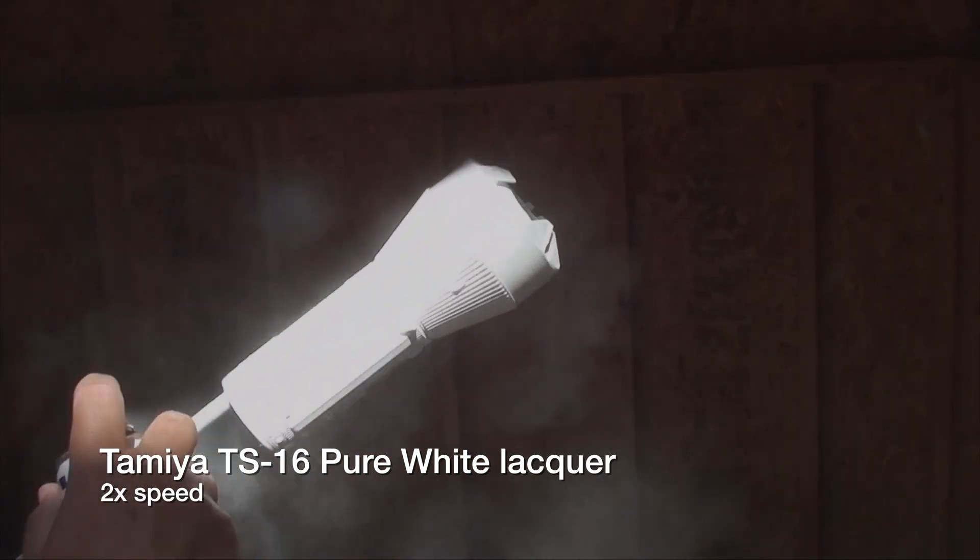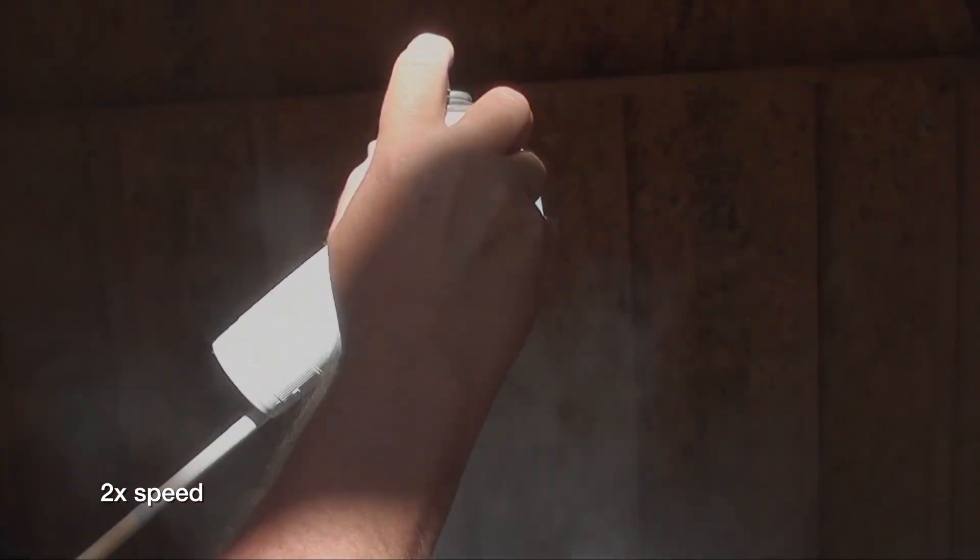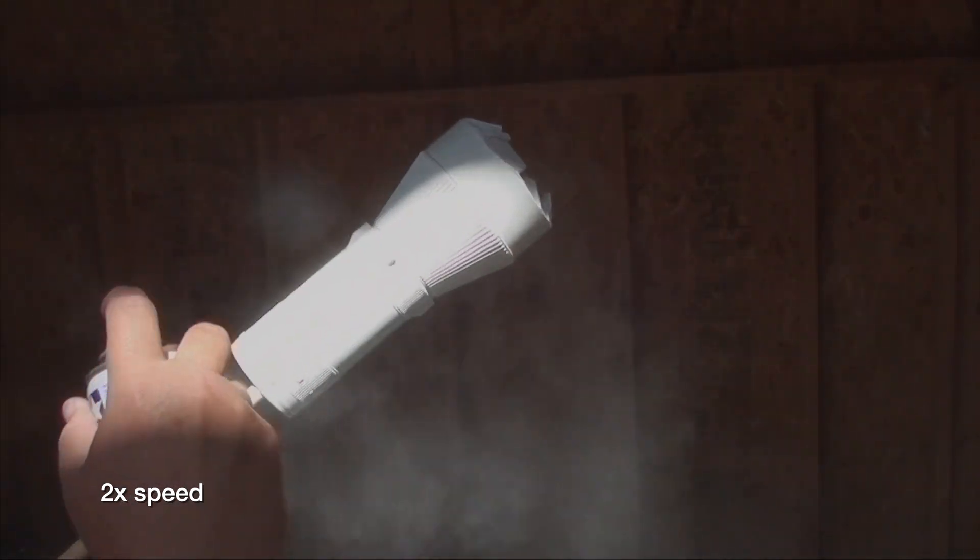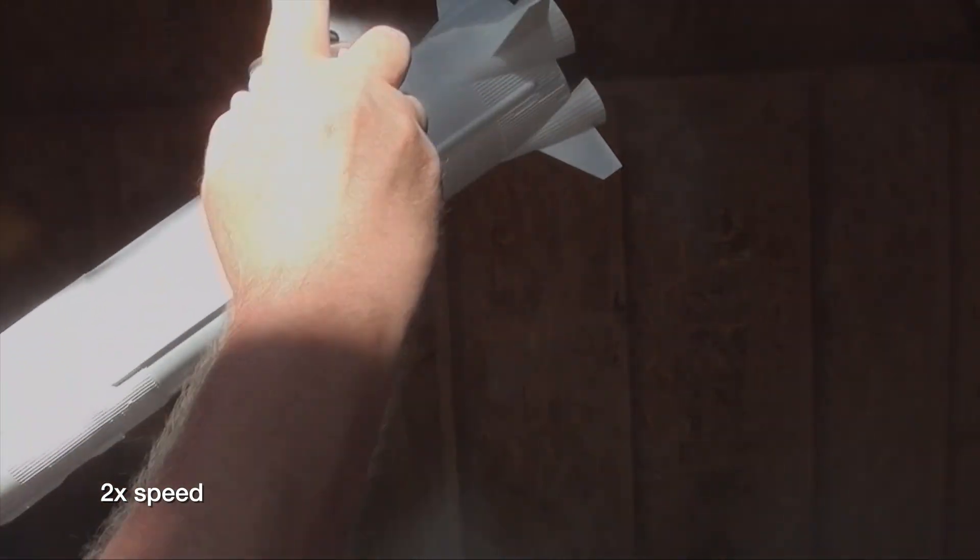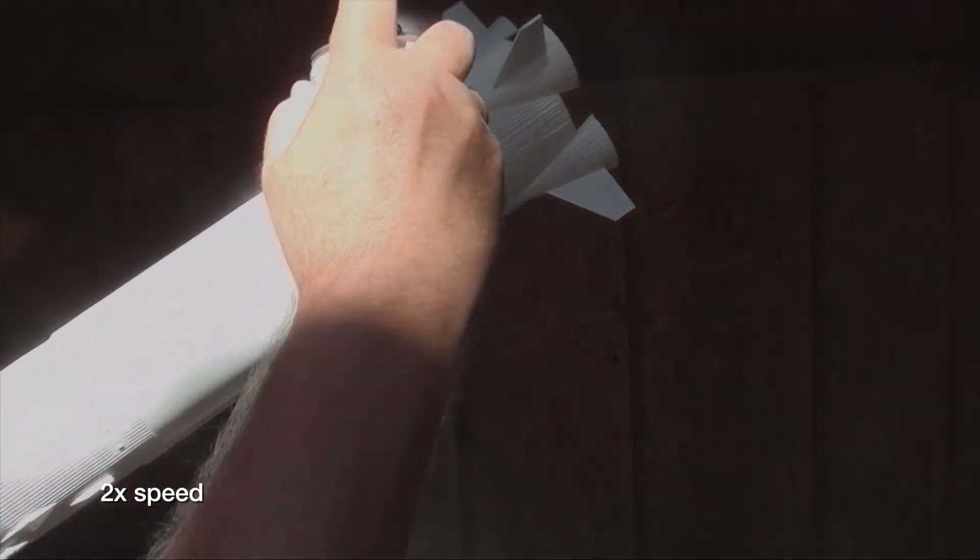The pure white lacquer is applied in long strokes beginning and ending off of the model. Because we had such a great white primer surface to begin with, we only needed three coats of lacquer to reach a solid finish. This took two and a half cans of paint by the way.